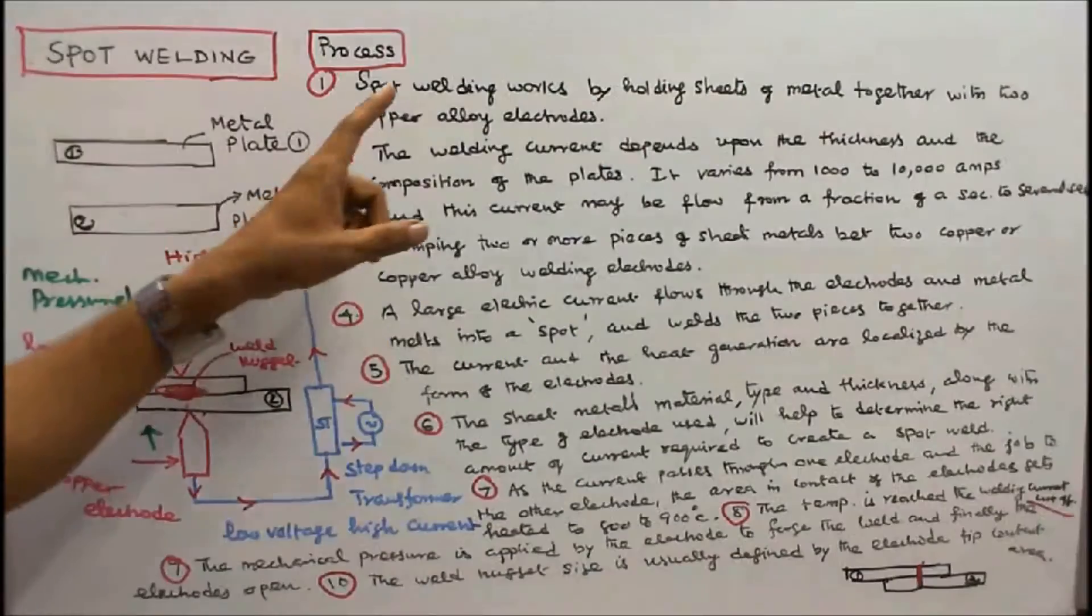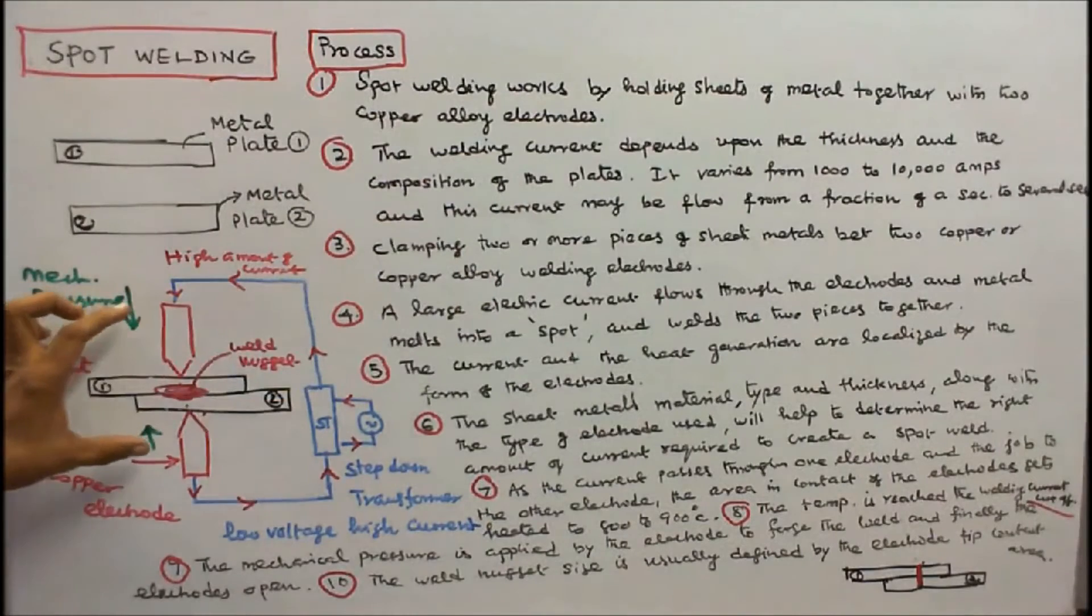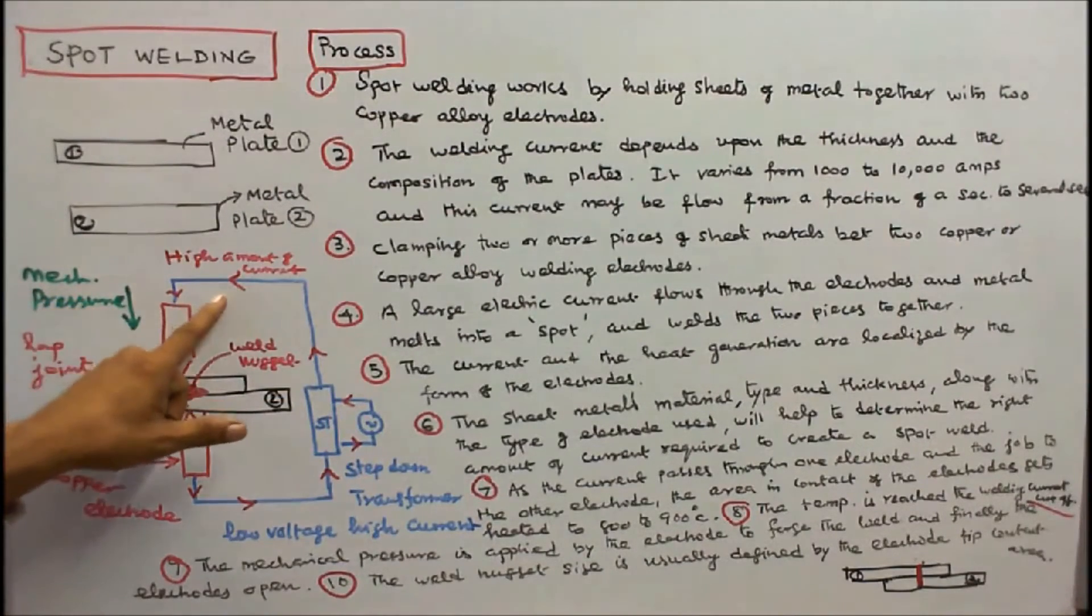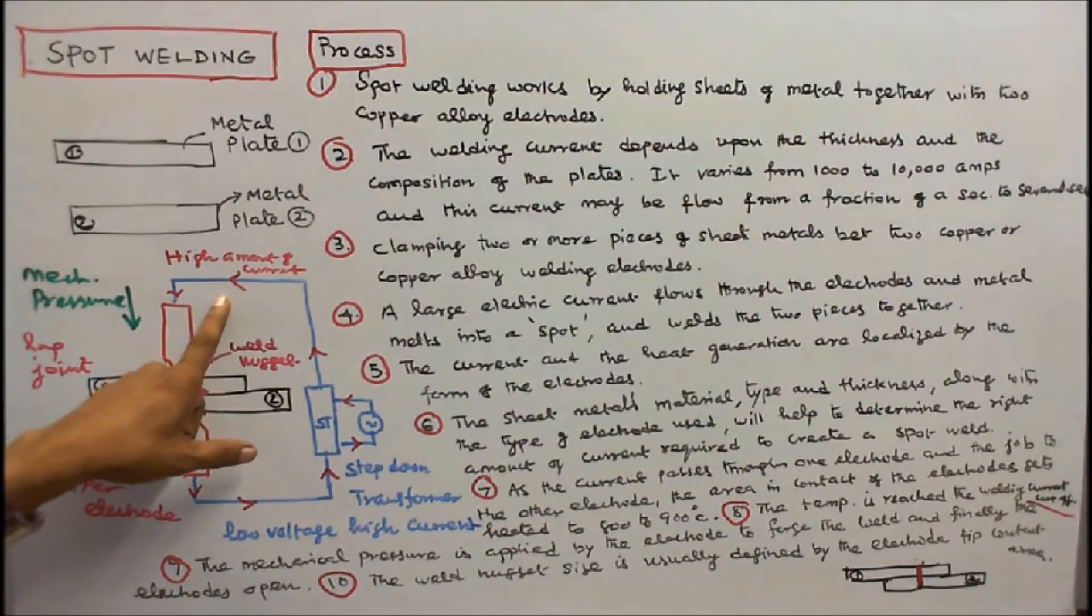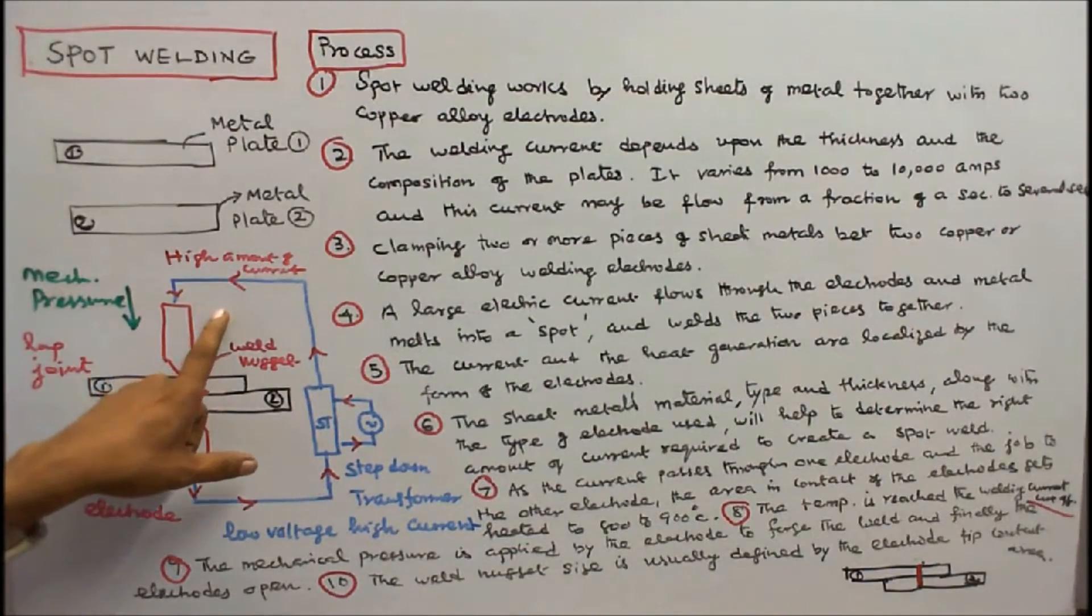Spot welding works by holding sheets of metal together with two copper alloy electrodes. The welding current depends upon the thickness and the composition of the plates. It varies from 1000 to 10,000 Amps.